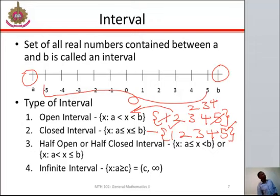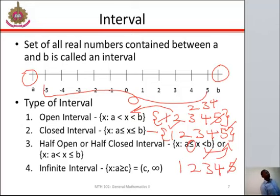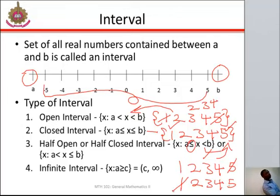Then half-open or half-closed interval. When we are representing such elements, the lowest number will be inclusive and the highest number will not be inclusive. Like on your screen, if we are to list this we will say 1, 2, 3, and 4 — 5 is not inclusive. This makes it a half-open interval. And if it is half-closed, we have 2, 3, 4, 5 — where 1 will not be inclusive.